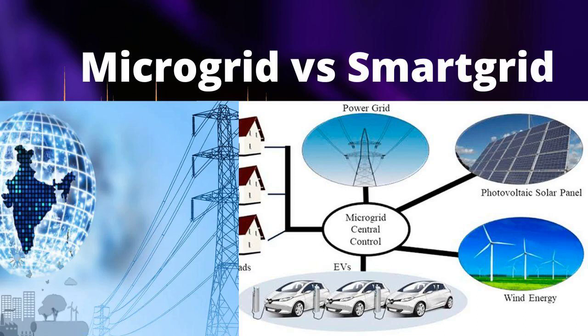Smart Grid: a smart grid is a modern electricity distribution system that uses advanced technology, communication, and automation to improve the efficiency, reliability, and sustainability of the grid. It encompasses a wide range of technologies and strategies to optimize grid operations.